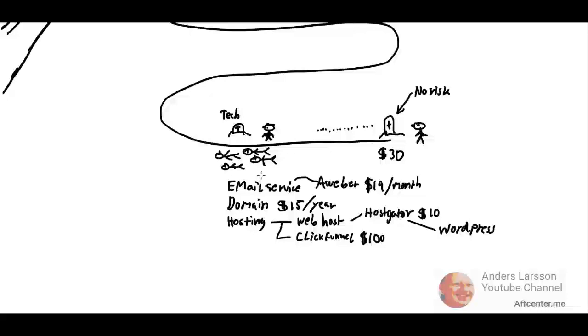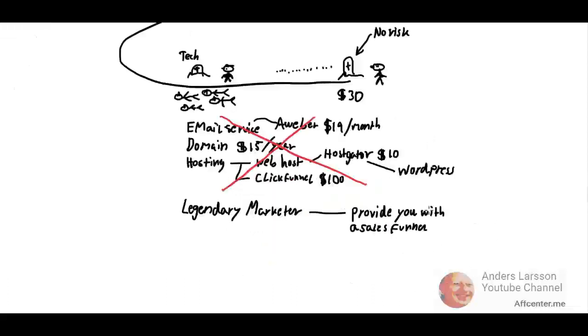But why not skip this in the beginning? What do you mean? I mean, you don't need all this. When you are just starting out, Legendary Marketer can provide you with a sales funnel. And for members, this is totally free. All you have to do is generate an affiliate link, create a video, and then recommend people to click the affiliate link in the description area below the video.